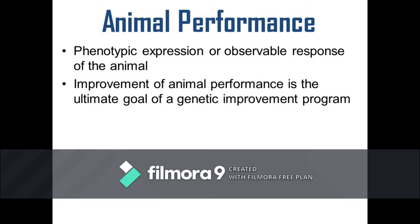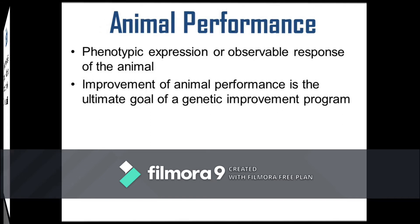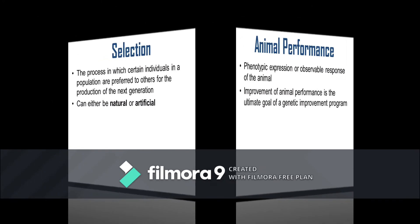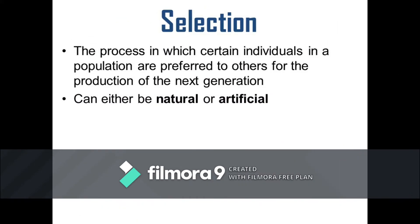Genetic improvement is attained through the process of selection. Selection refers to the process in which certain individuals in a population are favored over the others for the production of the next generation.